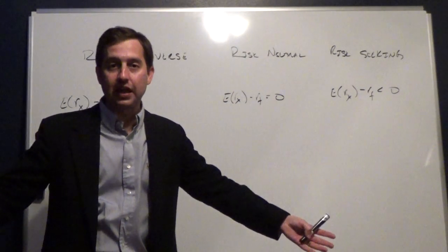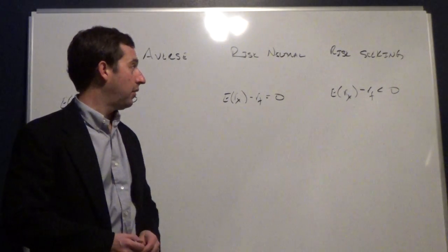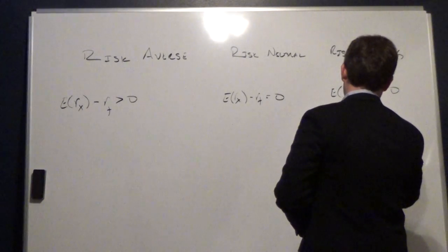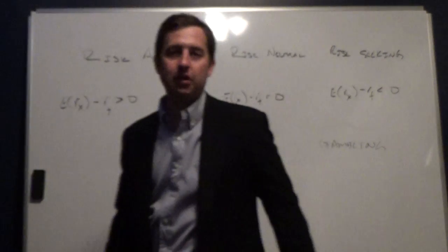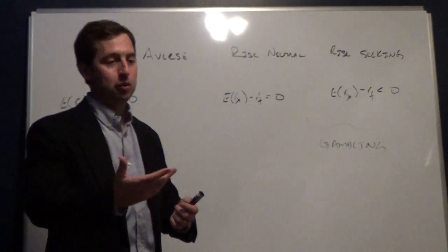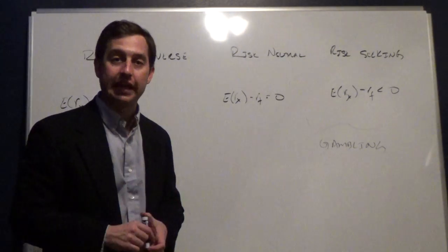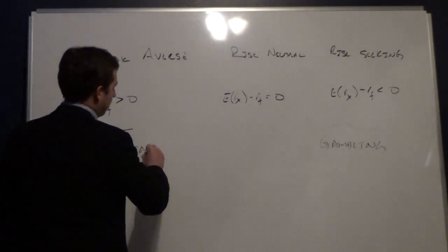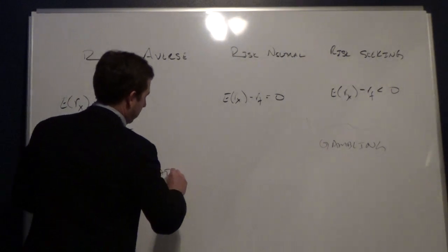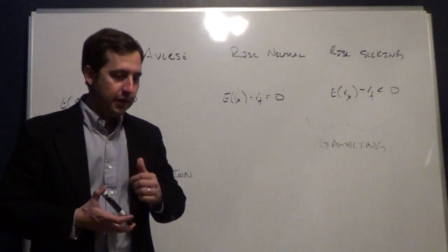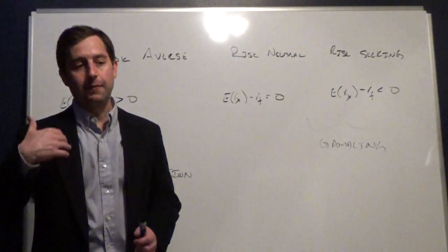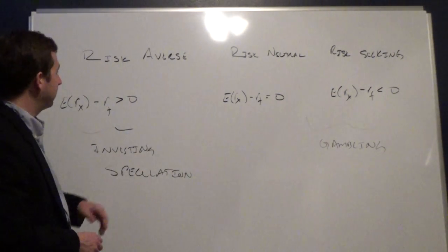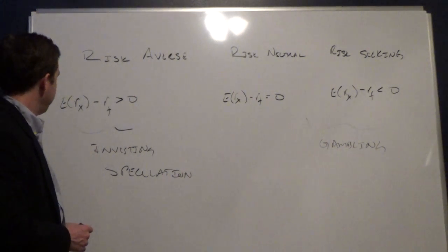Does risk-seeking behavior exist? Absolutely — Las Vegas and the lottery are examples of risk-seeking behavior. We can classify this as gambling, which we would define as taking on risk without demanding any expected return for the risk being taken. A risk-averse investor's behavior, by contrast, we would call investing or speculation — taking on risk for some gain, meaning an expected return beyond the risk-free rate.